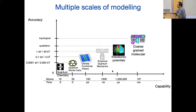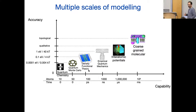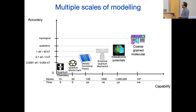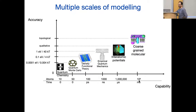What I've illustrated here with these different pictures and names is a whole hierarchy of methods — various treatments, simplifications, coarse graining, and all kinds of simplifications of the original Schrödinger equation — which helps us move along this axis of capability.